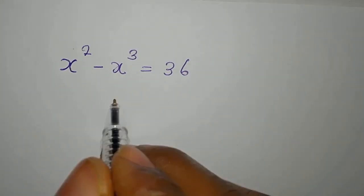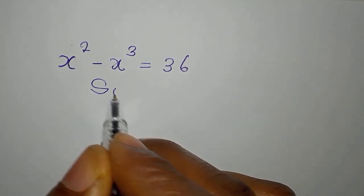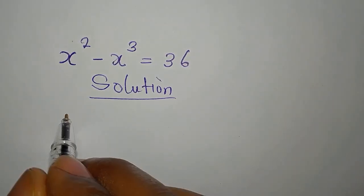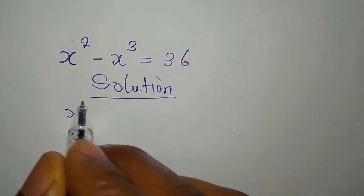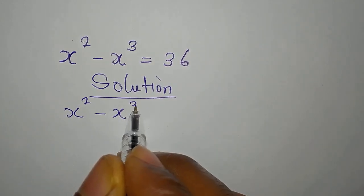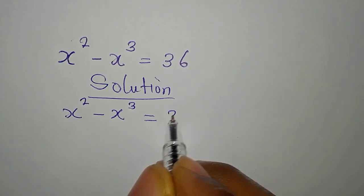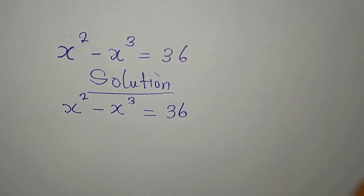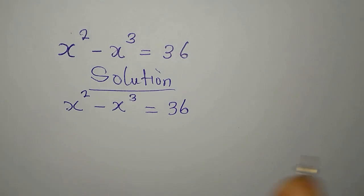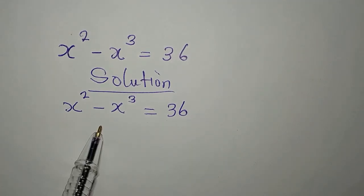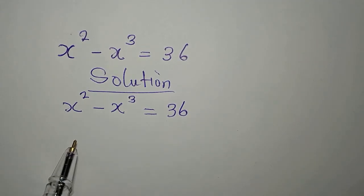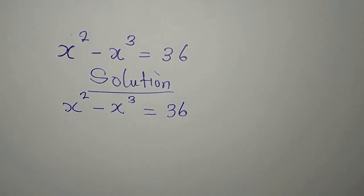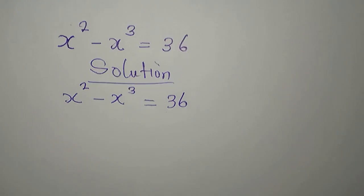Hello everyone. Let's provide the solution to this problem. We have x squared minus x to the power of 3 equals 36. By looking at this, you will see that it looks impossible, but it can be solved — this is less than this. And how come we subtract them to get this number? Now watch the way I will solve it.